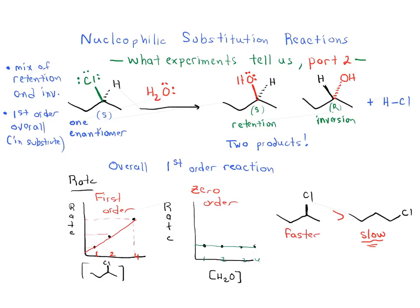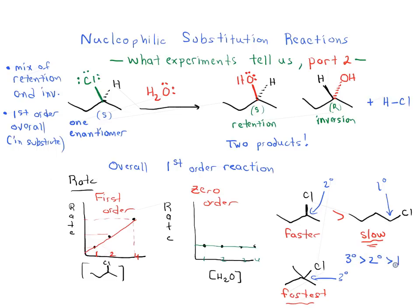If we compare this to the reaction with tert-butyl chloride, we find that this reaction is even faster — the fastest among the three. Thinking back to nomenclature, 1-chlorobutane has a primary carbon, 2-chlorobutane is secondary, and tert-butyl chloride is tertiary. So what we find is that tertiary is fastest, faster than secondary, which is much faster than primary.